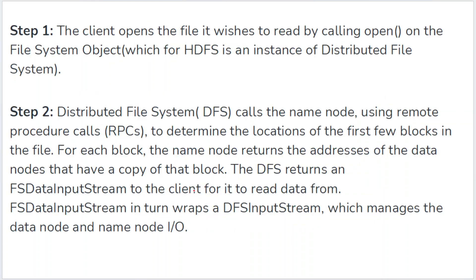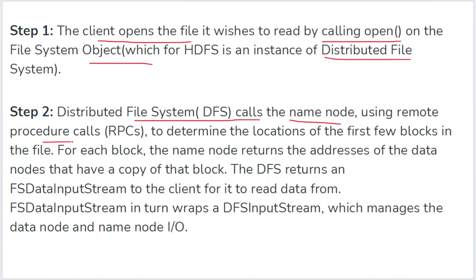For examination purposes, here is the step-by-step process. Step 1: the client opens the file using the open function on the file system object, for which HDFS is an instance of the DistributedFileSystem. Step 2: the DistributedFileSystem calls the name node using RPC to get the locations of the first few blocks of the file.